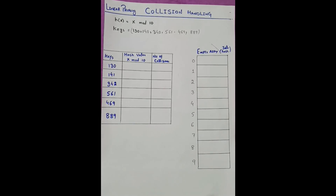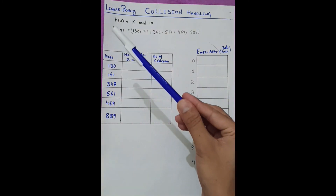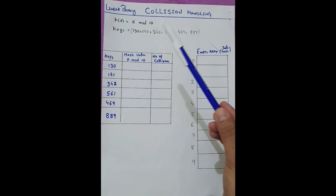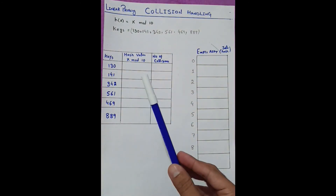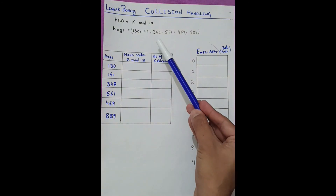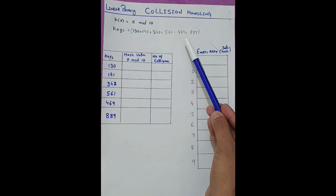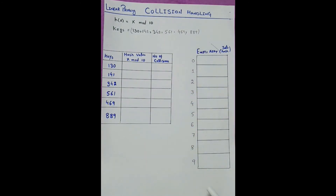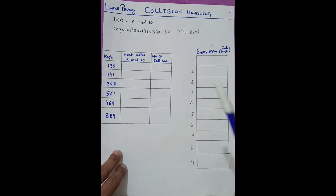Assalamualaikum, welcome to Nasir Soft. In this video we will talk about collision handling through linear probing. We have a hash function h(x) = x mod 10, where the keys are 130, 141, 342, 561, 469, and 889. This is our hash table — the table size is 10.